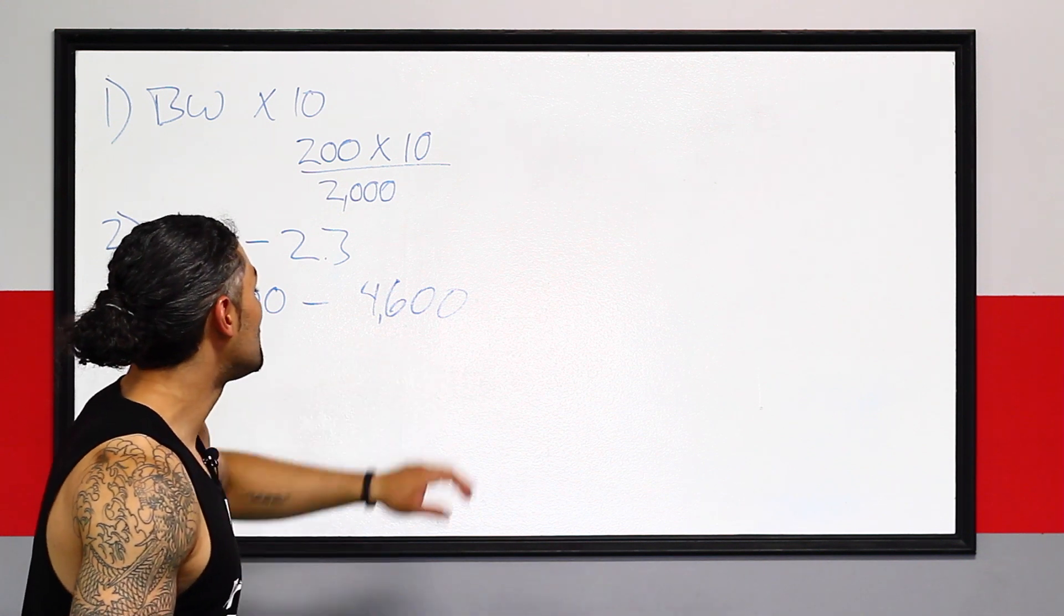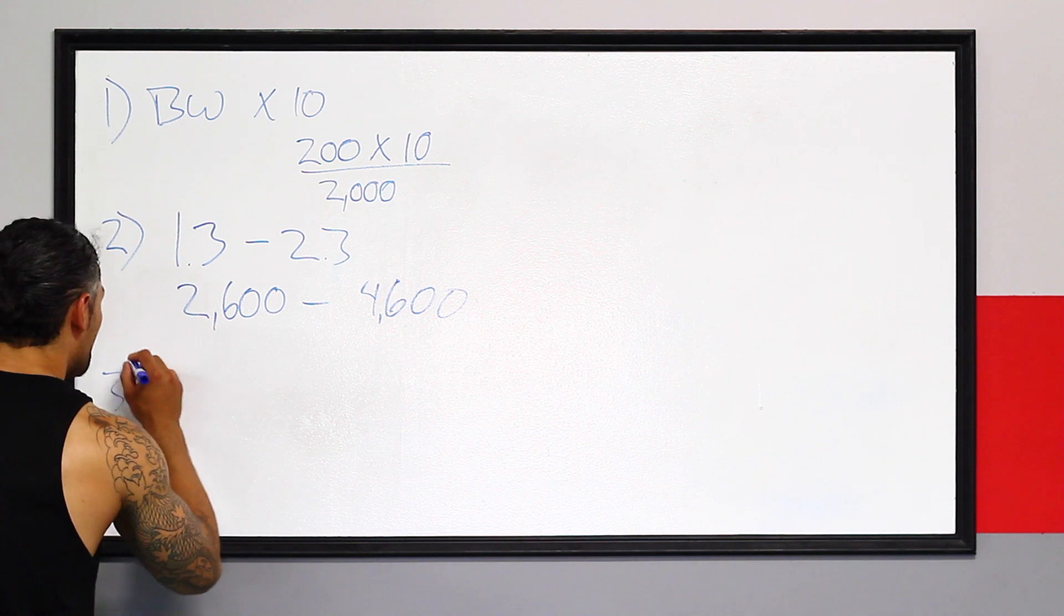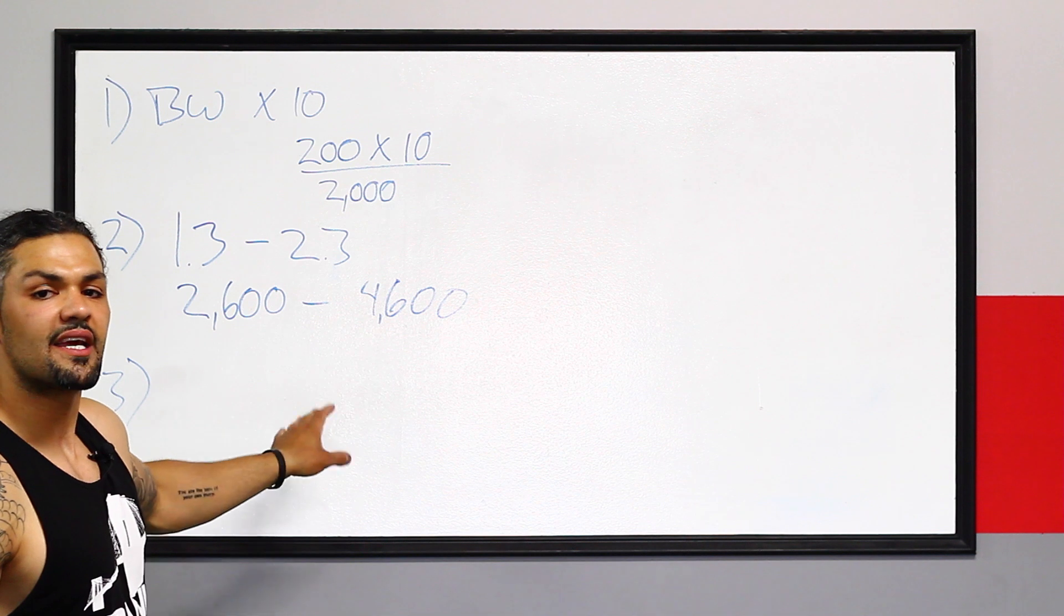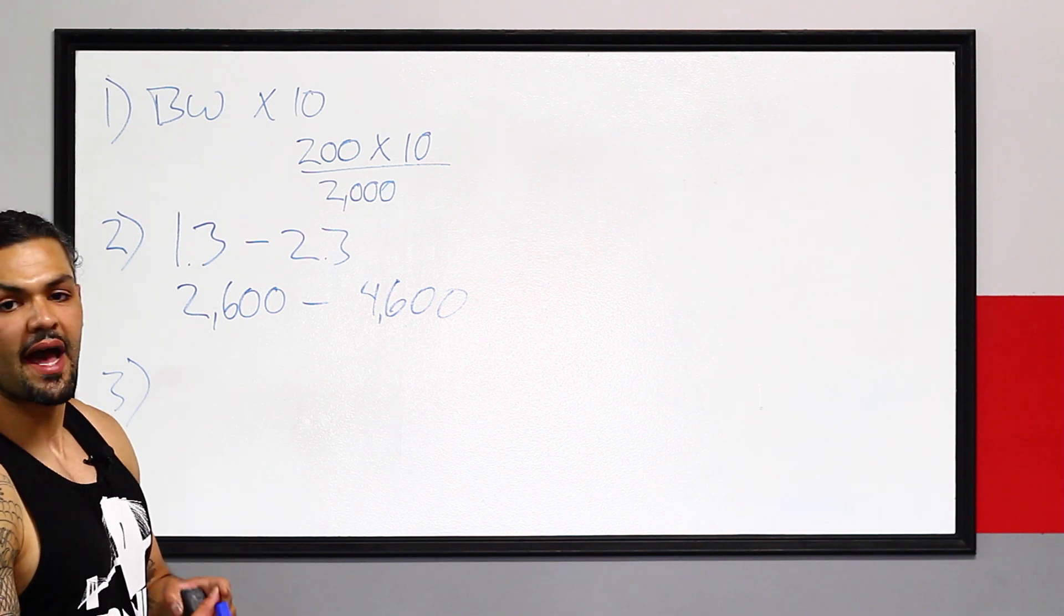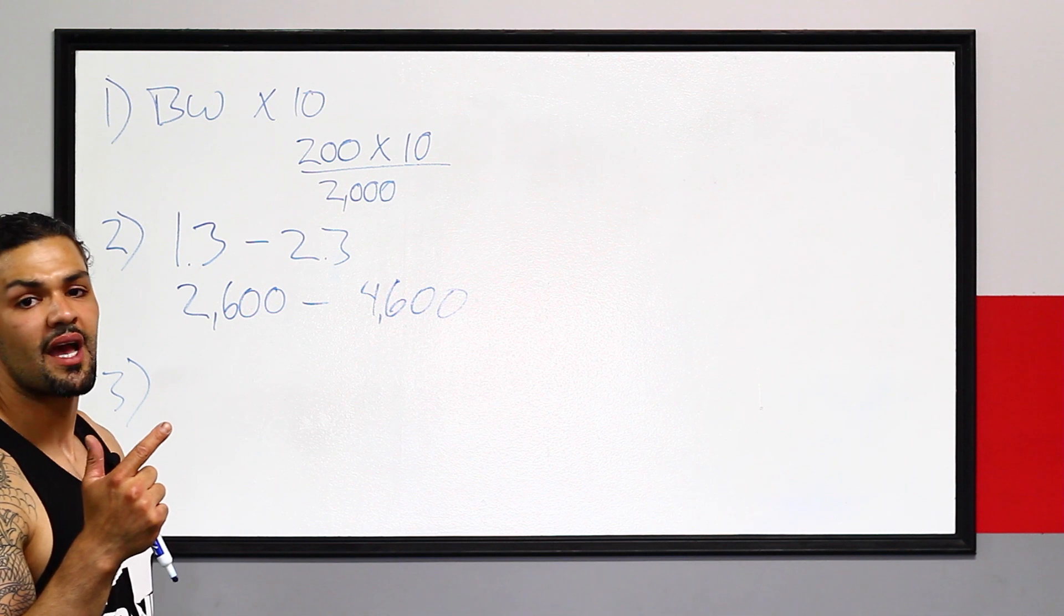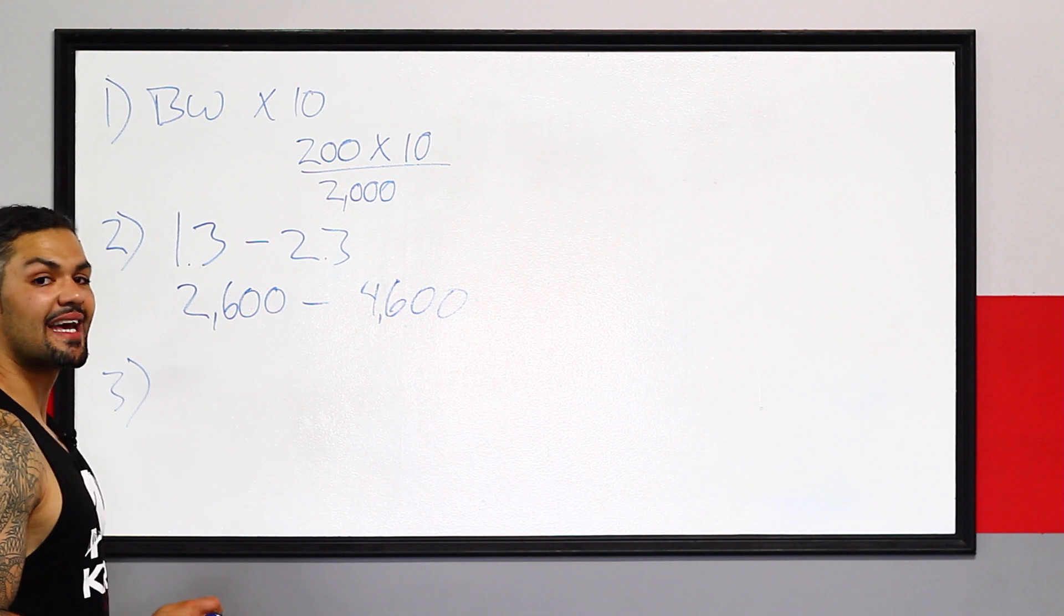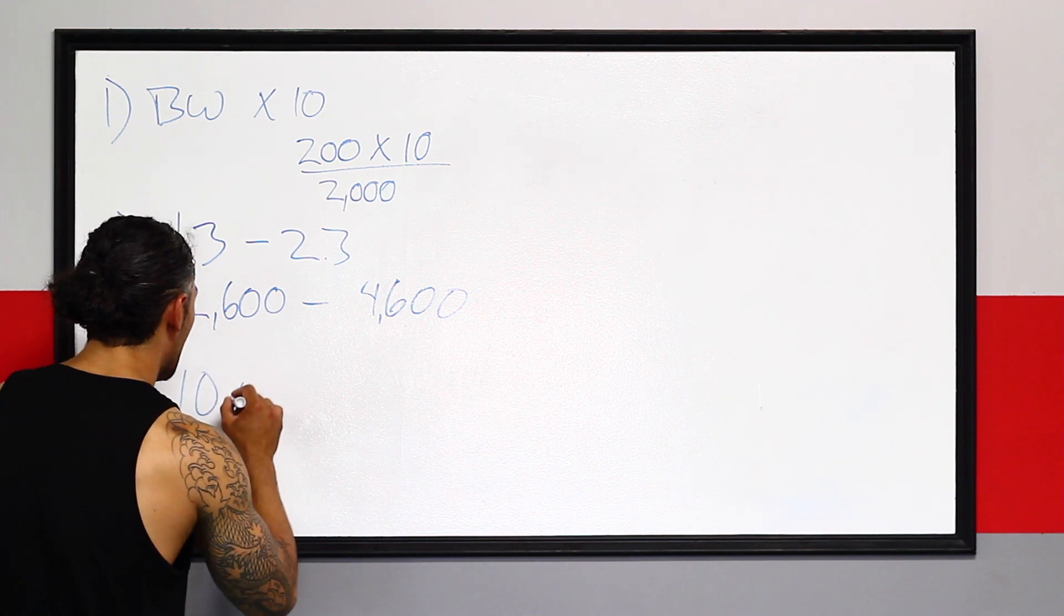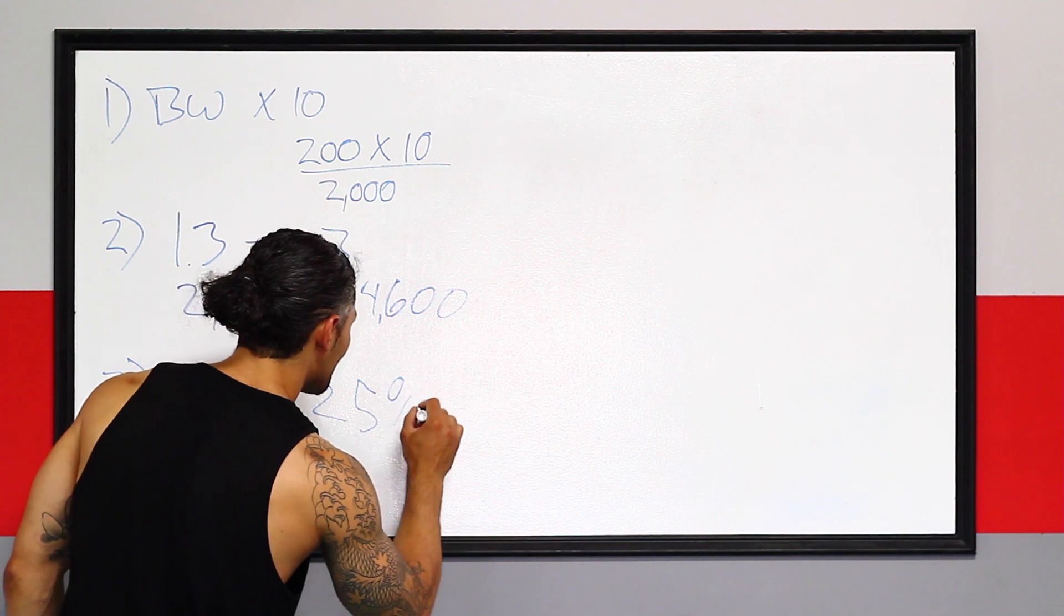We have anywhere between 2,600 and 4,600 calories. Number three. Number three is the last part. Now, in number three, we have to understand the direction that it is we want to go. You know what your goal is. People come in here for three goals for the most part. Burn fat, build muscle, athletic performance. We're going to focus on the first two. Athletic performance, we'll leave it for another video. But I like to use a percentage base caloric addition or subtraction. So I like to go anywhere from 10% calories to 25%.